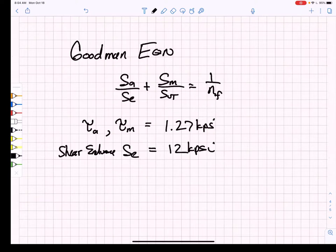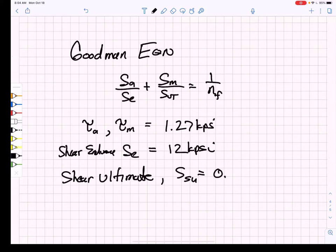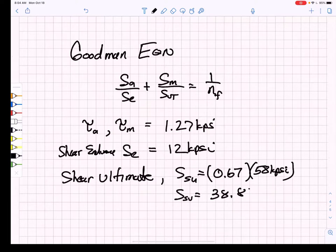Now I need my shear ultimate, and that's going to be different from my tensile ultimate. It turns out that the shear ultimate is about 67% of my tensile ultimate, and I'm going to use the ultimate tensile strength of the base metal. So my shear ultimate tensile strength is 38.86 kpsi.